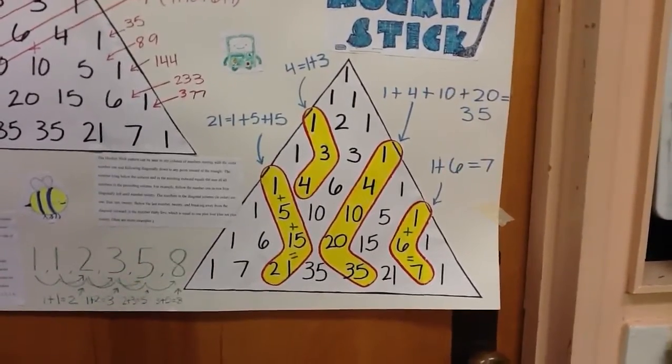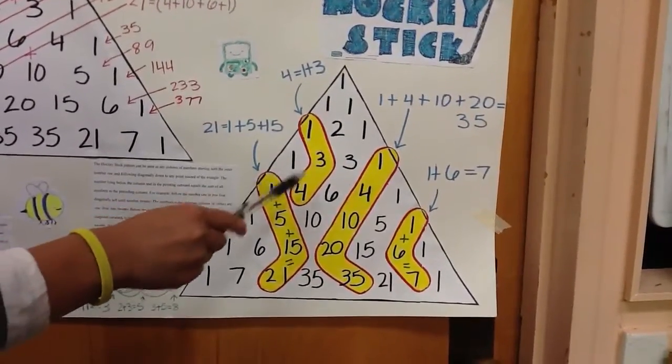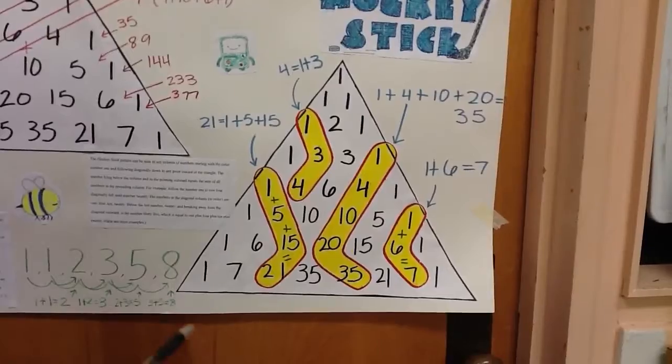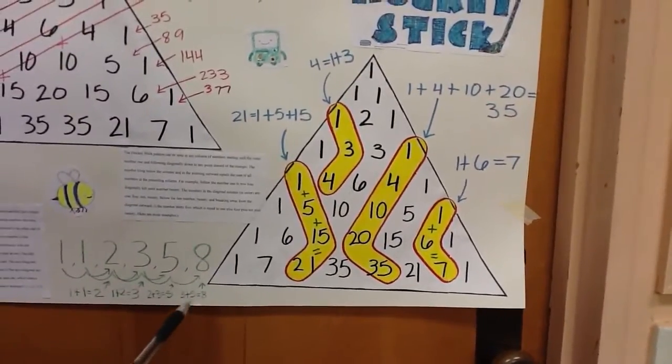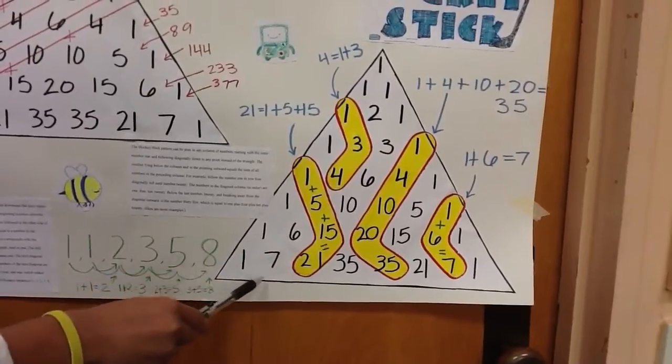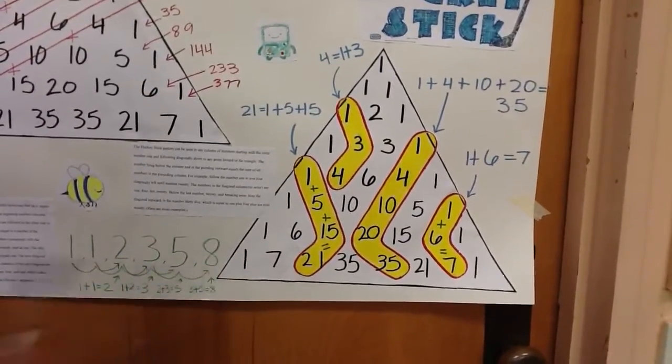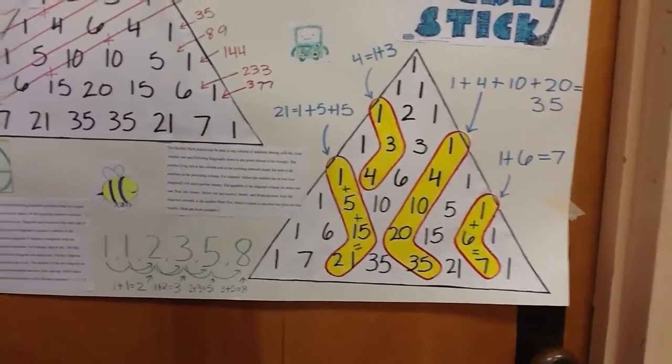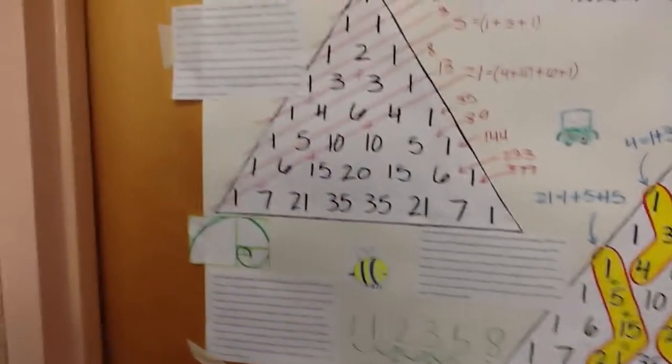Another example would be 1, 3, and they equal 4. And you can do this starting with any number 1 and going inward to the triangle and then out, any hockey stick shape. So the other pattern I chose to do is the Fibonacci sequence.